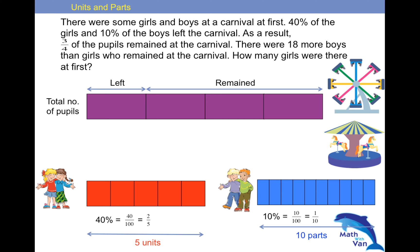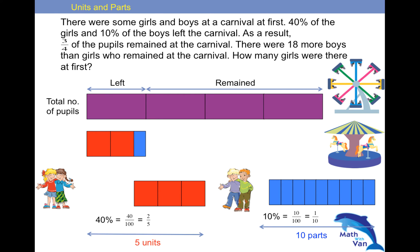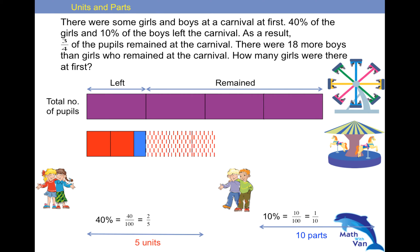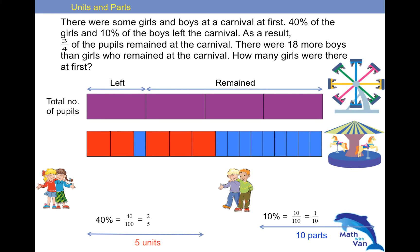Now I'm going to plug in the red and the blue into the purple — that's what it becomes. We are told that 40% of the girls and 10% of the boys left the carnival, and that is actually 1 quarter of the pupils. So 2 units disappear and 1 part disappears to form your 1 quarter of the pupils. Whatever is left refers to those who remain at the carnival, so 3 units and 9 parts will make up the 3 quarters of the pupils.